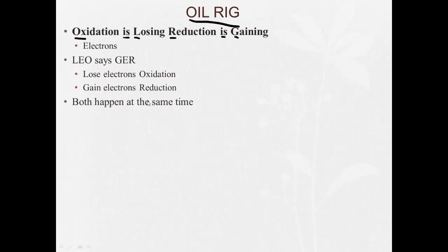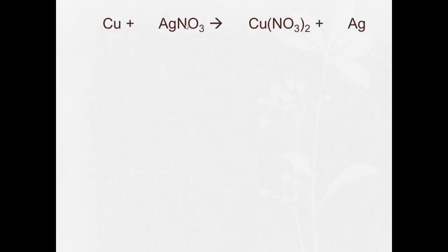Now both happen at the exact same time. Electrons are transferred from one species to another. So let's look at an example. Here's an oxidation reduction, a redox reaction, where copper plus silver nitrate forms copper nitrate and silver metal. So we need to balance this and look at it and see what's going on.